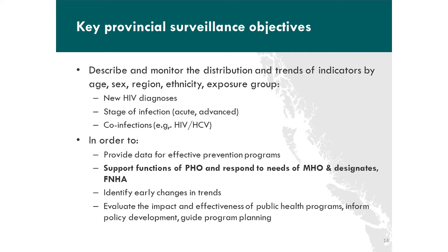Just in terms of how Stop fits with the overall provincial surveillance objectives: for our provincial surveillance, it's really about describing and monitoring the distribution and trends of indicators by age, sex, region, ethnicity, and exposure group — both new HIV diagnoses, stage of infection, as well as co-infection such as HIV and hepatitis C. Our provincial objectives are to provide data for effective prevention programs, support the functions of the provincial health officer, and identify changes in trends to evaluate the impact and effectiveness of public health programs. The provincial objectives for surveillance really overlap closely with Stop HIV.